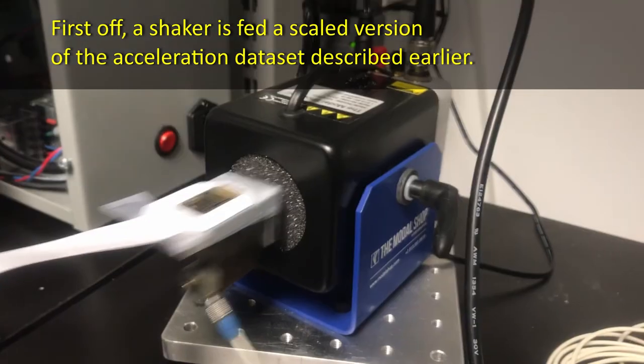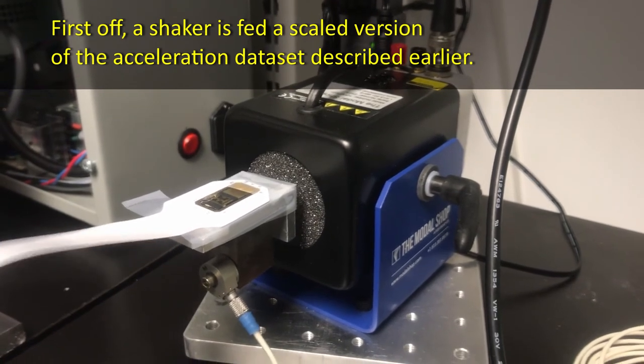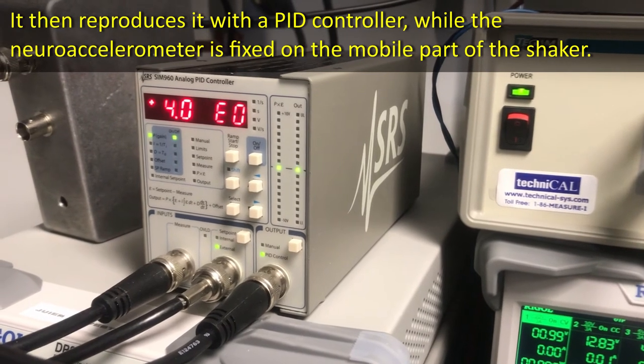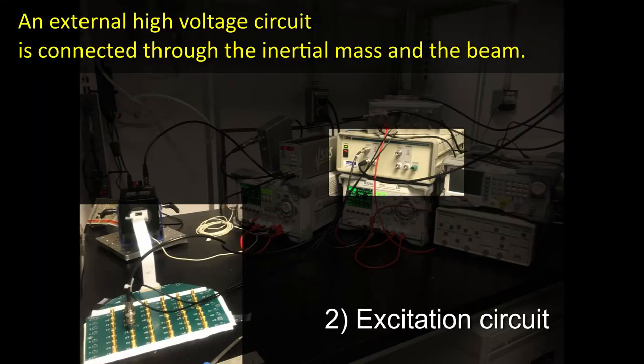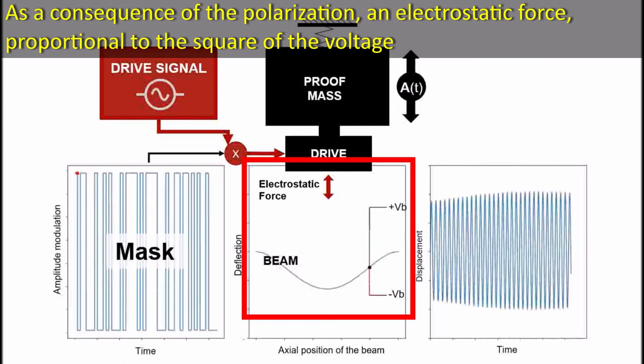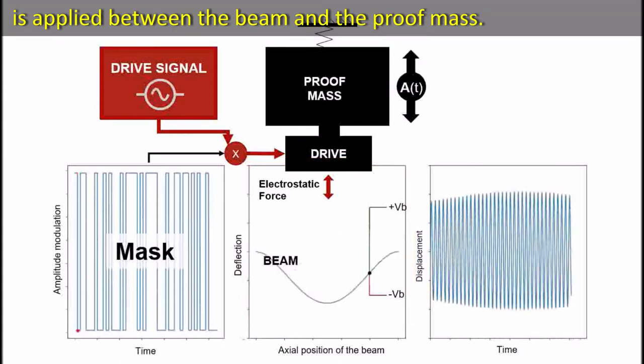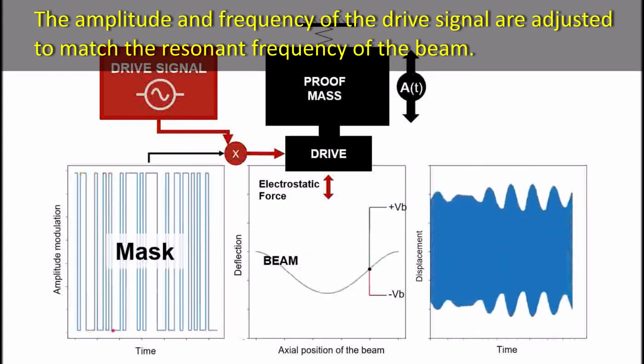First off, a shaker is fed a scaled-down version of the acceleration dataset described earlier. It then reproduces it with a PID controller, while the neuroaccelerometer is fixed on the mobile part of the shaker. An external high-voltage circuit is connected through the inertial mass and the beam. As a consequence of the polarization, an electrostatic force proportional to the square of the voltage is applied between the beam and the proof mass. The amplitude and frequency of the drive signal are adjusted to match the resonant frequency of the beam.